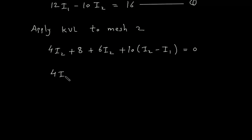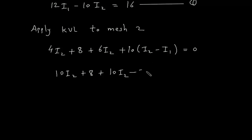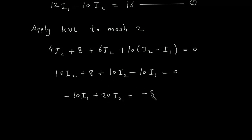Simplifying: 4I2 plus 6I2 gives 10I2, plus 8, plus 10I2 minus 10I1 equals 0. So minus 10I1 plus 20I2 equals minus 8. Let's call this equation number 2.